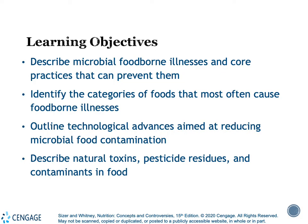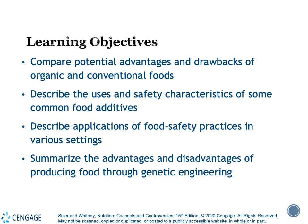We're going to look at the categories of food that most often cause foodborne illness, some of the technological advances that help protect us. We'll also discuss toxins and pesticides and look at problems associated with that. We will look at organic foods and conventional foods, the differences between those, some of the food additives and what's safe about them and what maybe is not so safe. And then we will look at food safety practices.